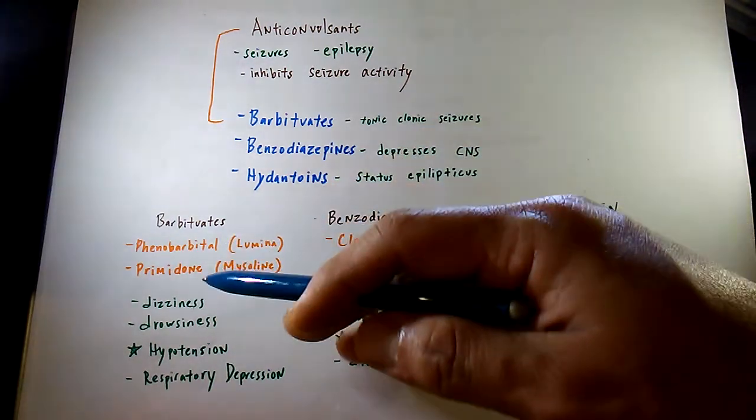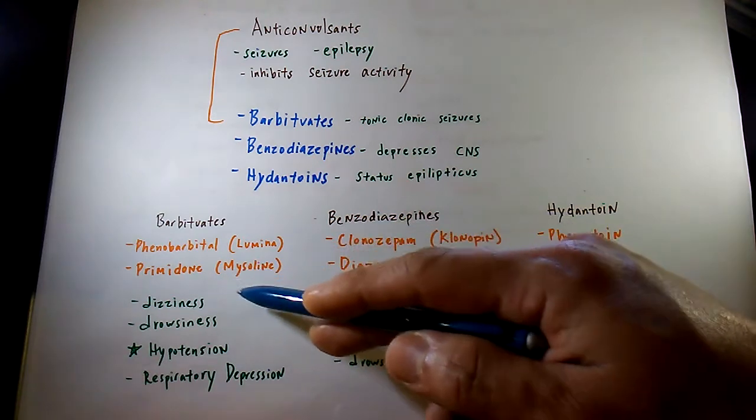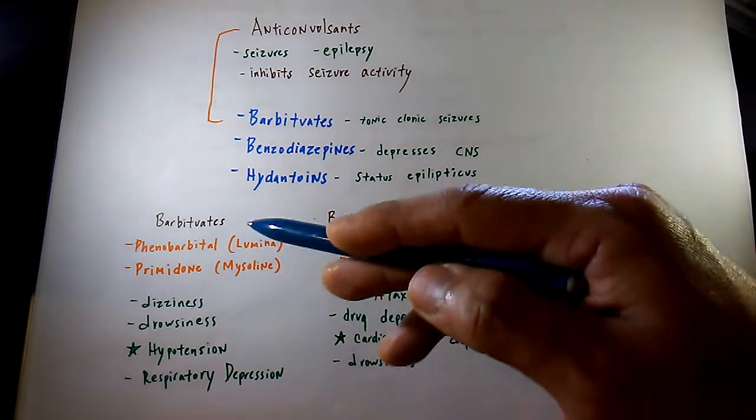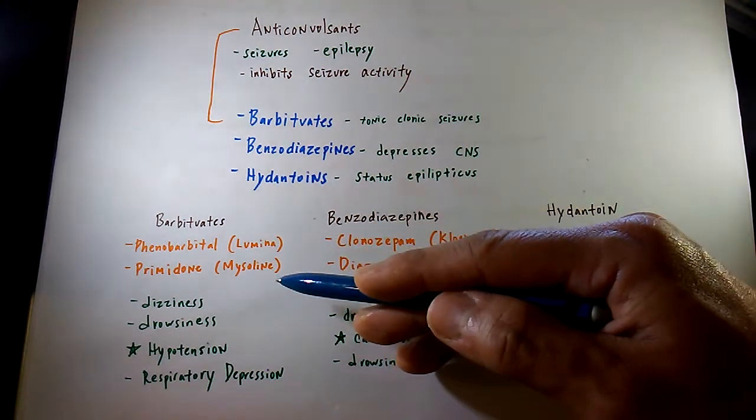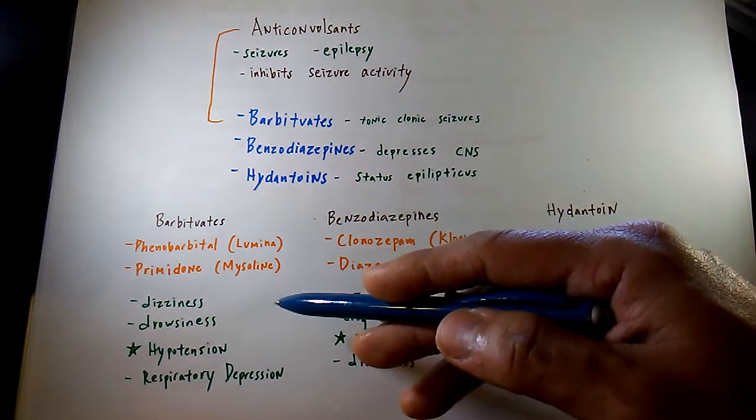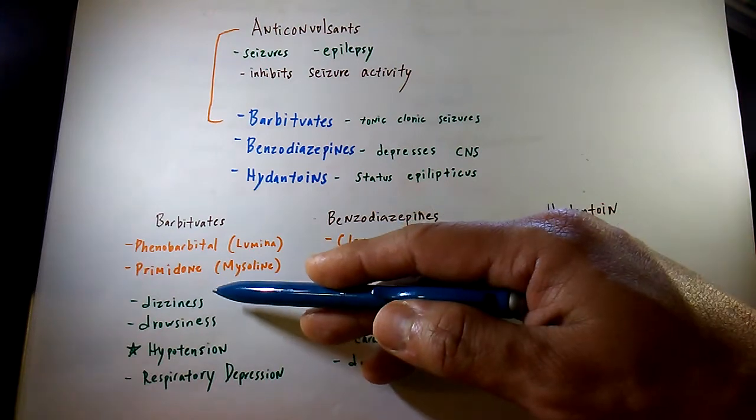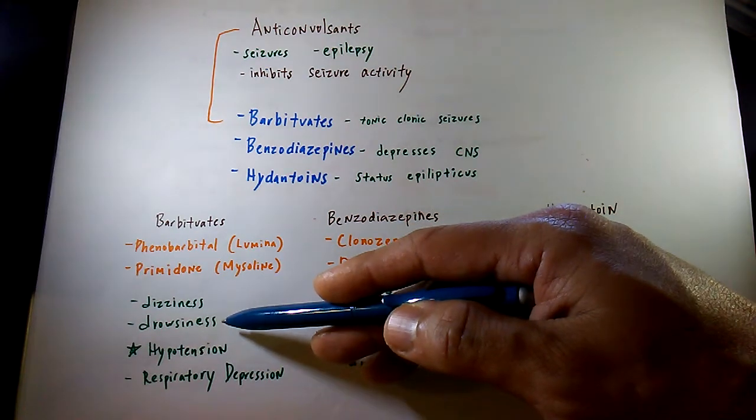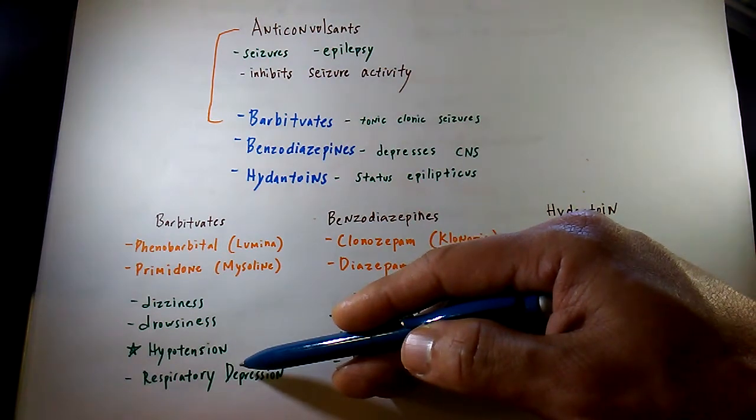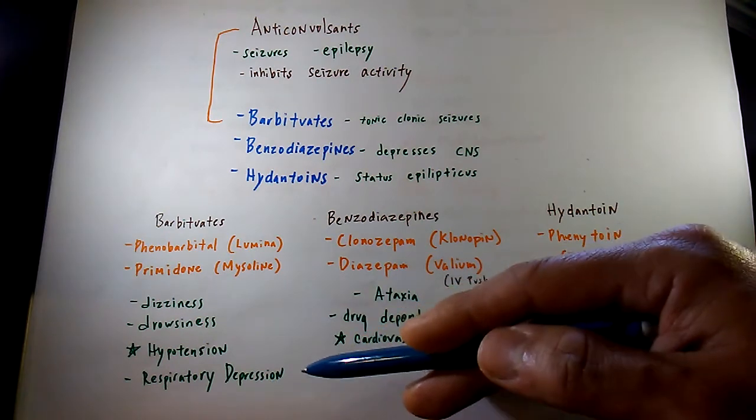With barbiturates, phenobarbital (Luminal) and primidone (Mysoline) are the most common medications you'll encounter on the NCLEX exam. Barbiturates are one of the most effective and widely used anticonvulsants. Side effects include dizziness and drowsiness. We need to watch out for hypotension and respiratory depression since it's a CNS depressant.